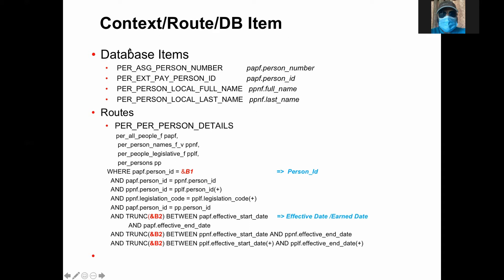Now, these three parts are what we call database items, routes, and context. The information coming out of the table — person number, person ID — this is what we call database items. In this case, the database items have their own names. For example, PER_ASSIGNMENT_PERSON_NUMBER is basically the person number. PER_EXT person ID is the person ID. Another one is PERSON_LOCAL_FULL_NAME for full name, and PER_PERSON_LOCAL_LAST_NAME is the last name. These are the database items.